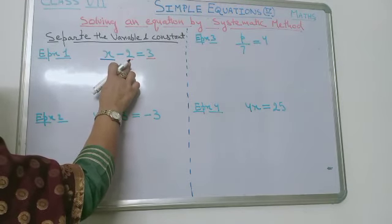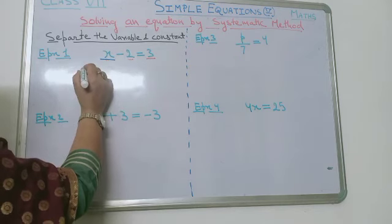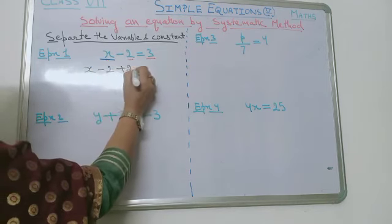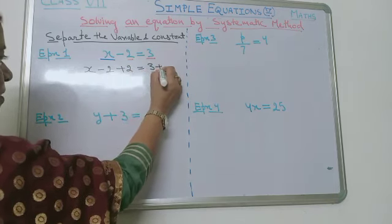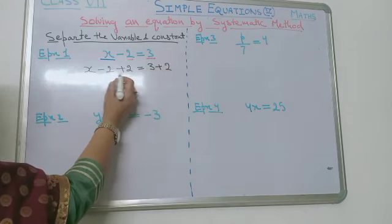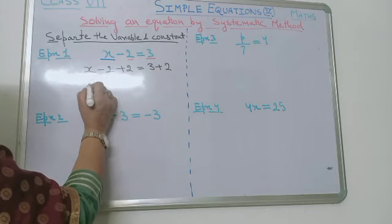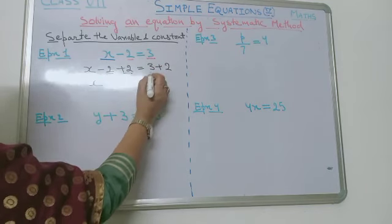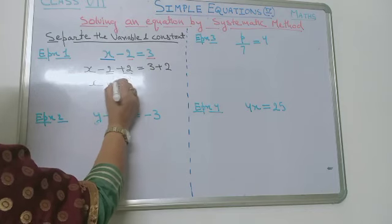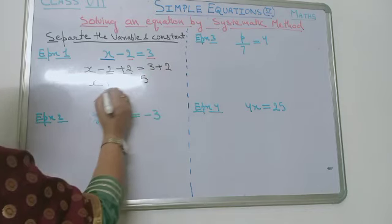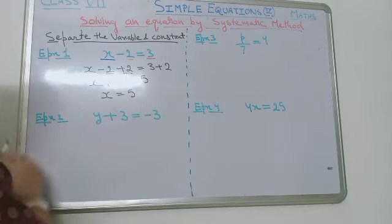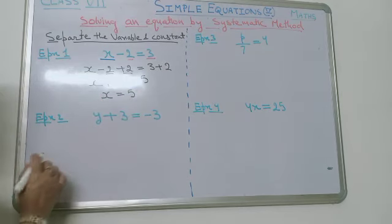To separate this 2, we have to add 2 to both sides. By adding 2 to both sides, these will become 0 and 3 plus 2 is 5. So the solution of the equation is x is equal to 5.